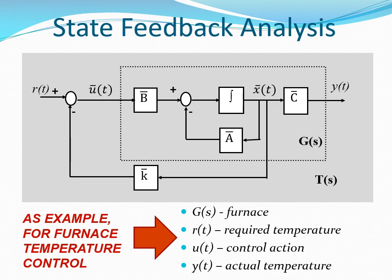The output YT is the actual temperature of the furnace. The input RT is the required temperature for the furnace. UT is the control action, which is the heat input into the furnace.